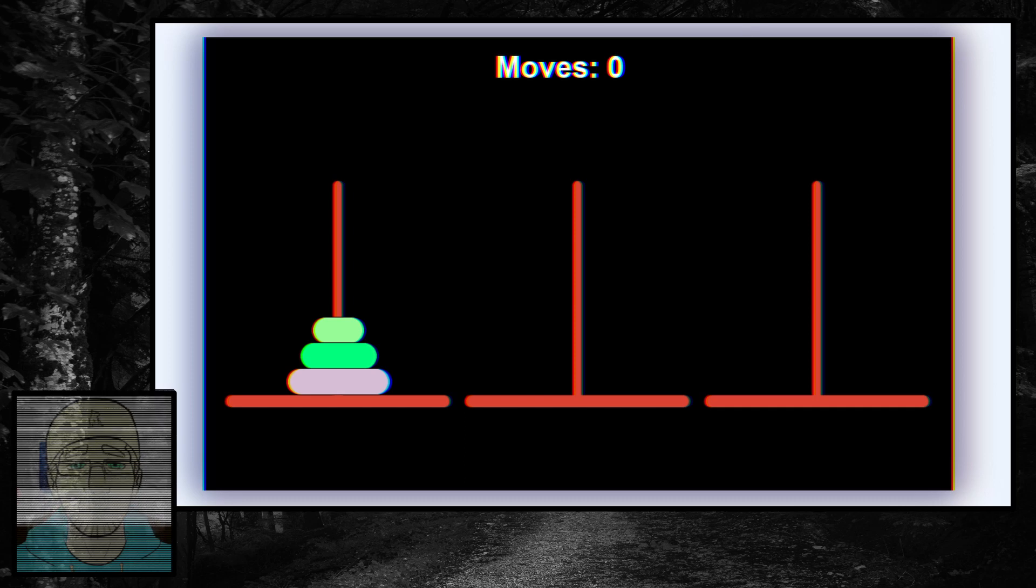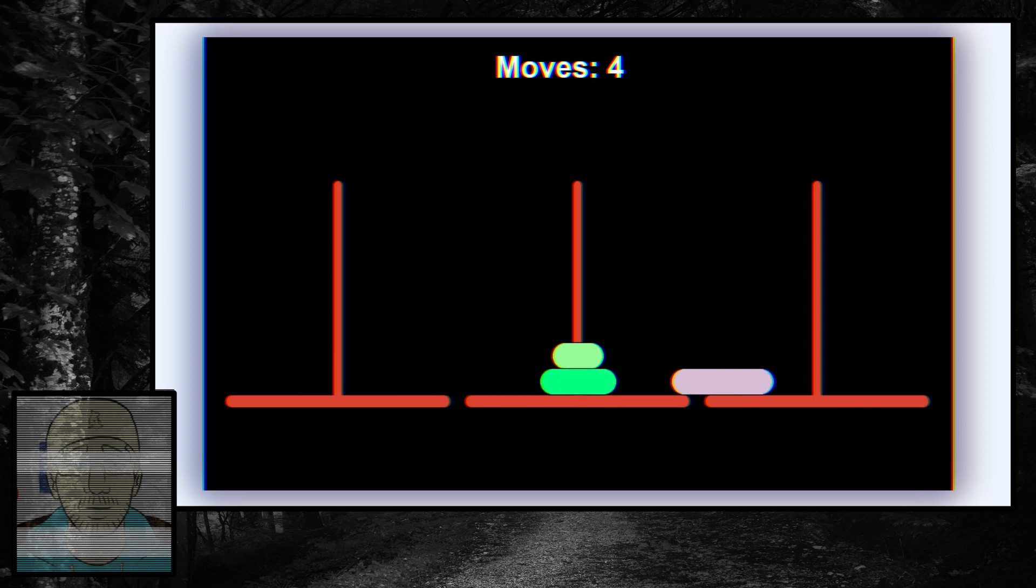So again, the optimized moves are: Ring 1 to post 3, Ring 2 to post 2, Ring 1 to post 2, Ring 3 to post 3, Ring 1 to post 1, Ring 2 to post 3, And finally, ring 1 to post 3. Total number of moves are 7.